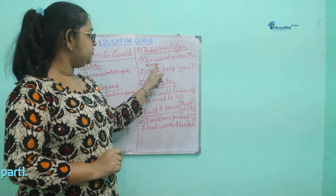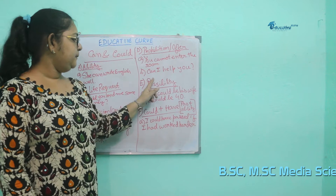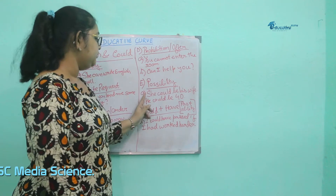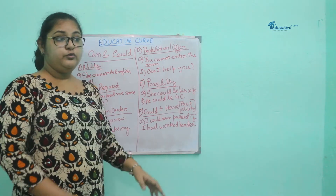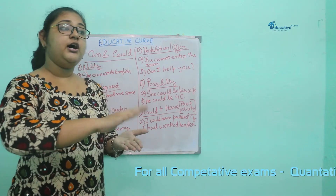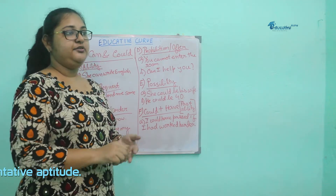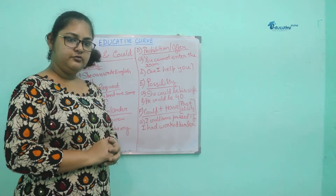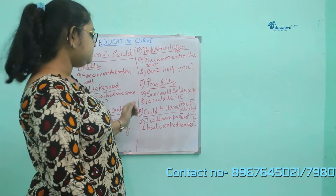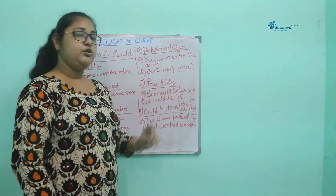Can is used to define prohibition and offer. Now, possibility means that something can occur or might occur. For example: she could be his wife. When seeing a person, we cannot be certain who that person is in relation to the other person standing beside them. So we think of several possibilities — she could be his wife, or she could be his mother.